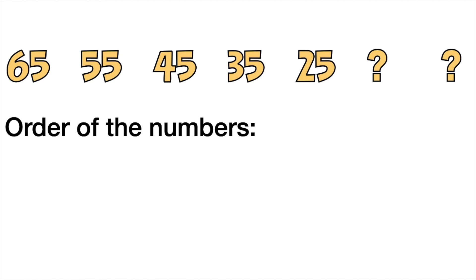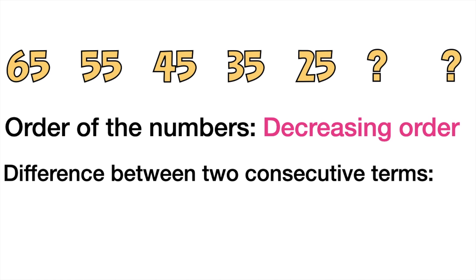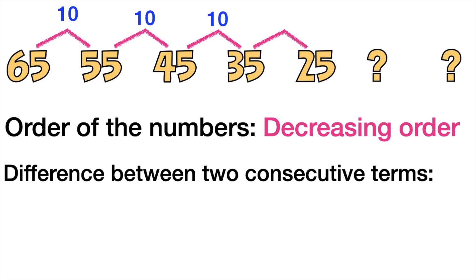How about if we have this? Sixty-five, fifty-five, forty-five, thirty-five, twenty-five. What do you think are the missing terms? Let's find out the order of the numbers — is it increasing or decreasing? That's correct, it's decreasing. Now let's find the difference between two consecutive terms. Sixty-five minus fifty-five equals ten. Forty-five minus thirty-five is also ten. And thirty-five minus twenty-five is also ten. The difference between two consecutive terms is ten.